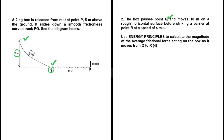The box passes point Q and moves 10 meters on a rough horizontal surface before striking a barrier at point R at a speed of 4 m/s. The question asks us to use energy principles to calculate the magnitude of the average friction force acting on the box as it moves from Q to R.